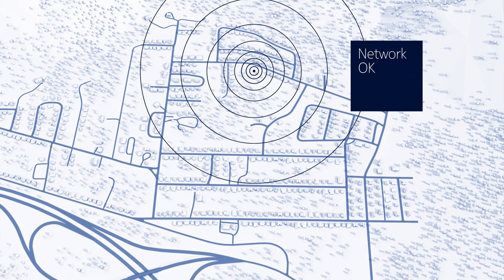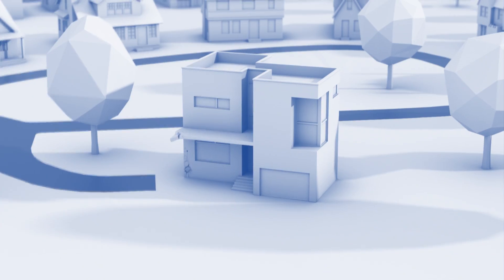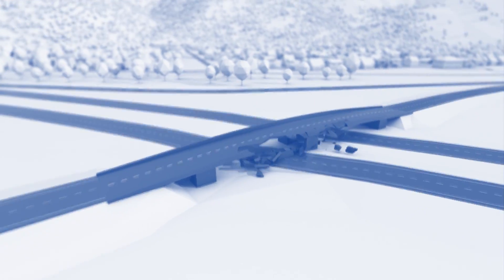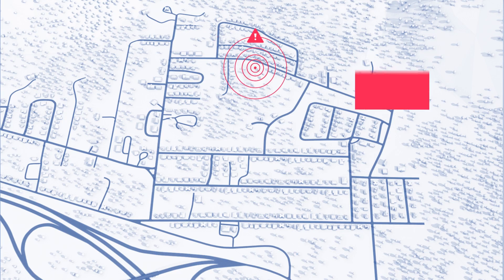Working networks are critical for public safety and security. Unfortunately, basic infrastructure can't always withstand the full force of nature. Critical networks can be damaged, which can mean a total blackout even in cities.